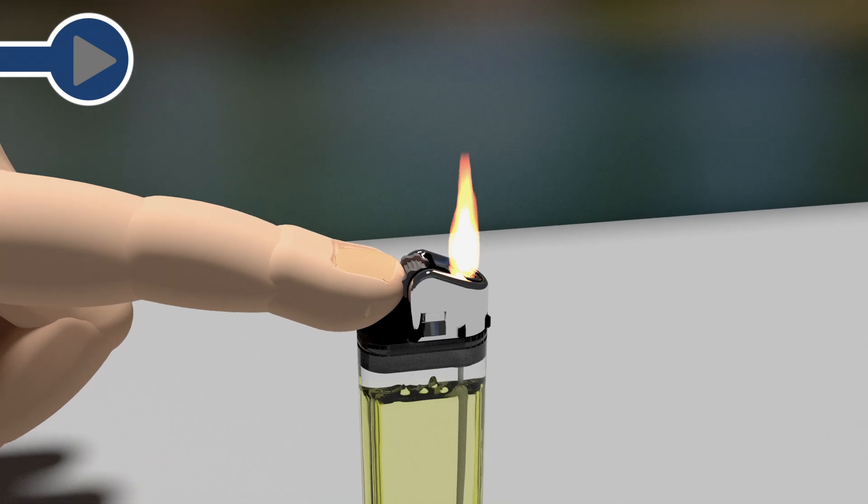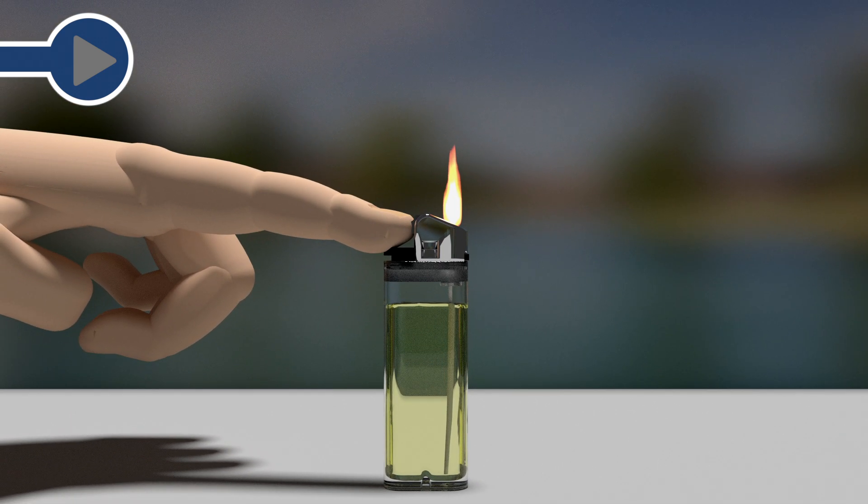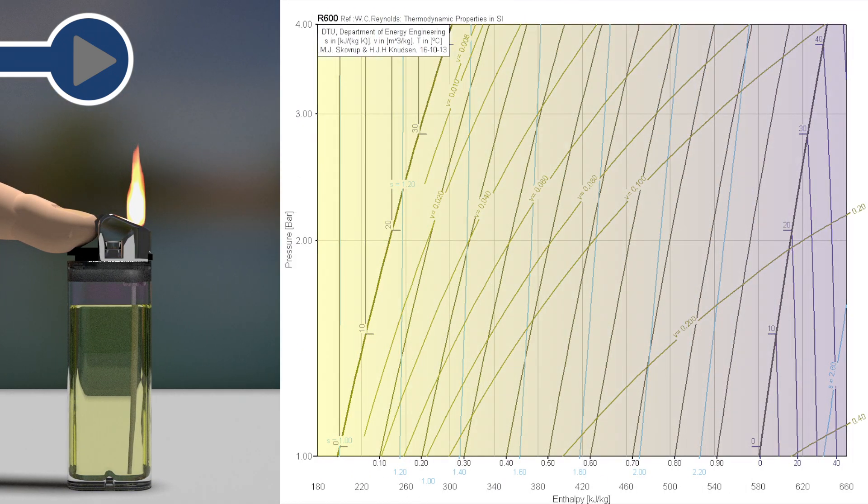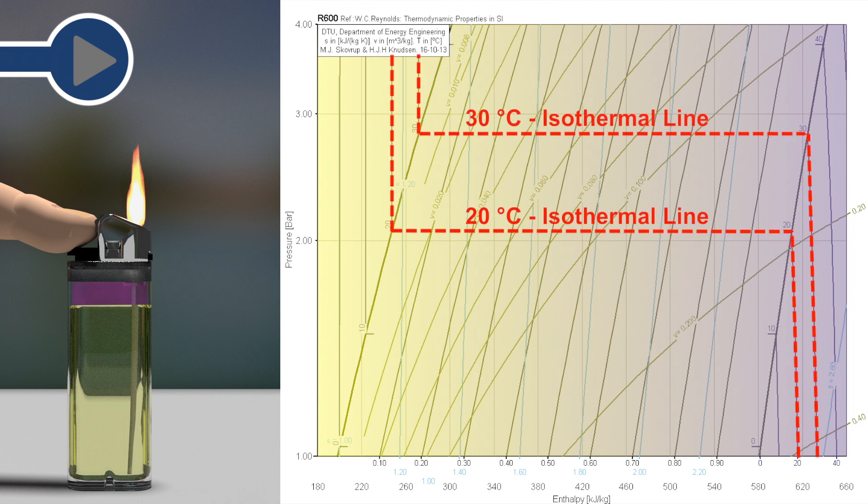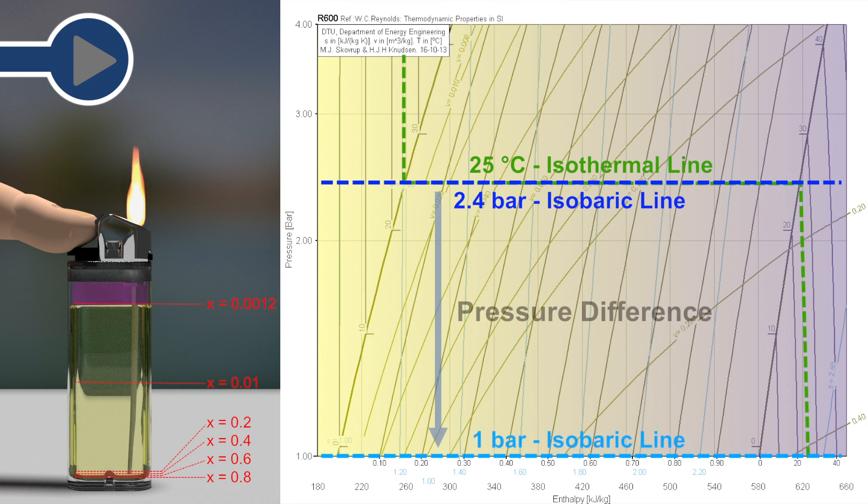From the outside, we can see that the lighter is filled both with liquid and gaseous butane. Hence the state of butane is in a two-phase domain, where pressure and temperature are coupled with each other. According to the diagram, butane in the two-phase domain with a temperature of 25 degrees Celsius has an absolute pressure of 2.4 bar, while in the outside atmosphere there is an absolute pressure of 1 bar. This pressure difference drives the flow of butane out of a lighter once the valve is opened.